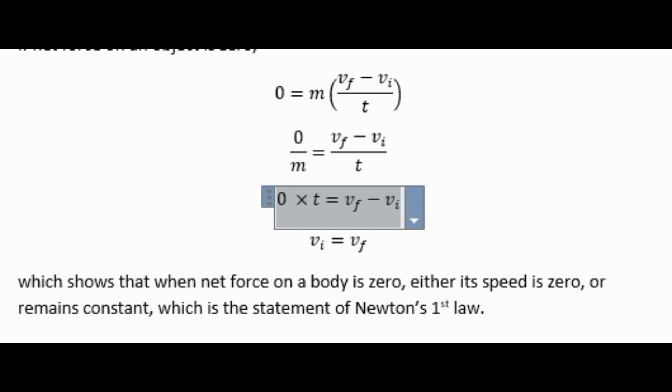0/m = (v_f - v_i)/t. 0 × t = v_f - v_i. v_i = v_f. This shows that when net force on a body is zero, either its speed is zero or remains constant, which is the statement of Newton's first law.